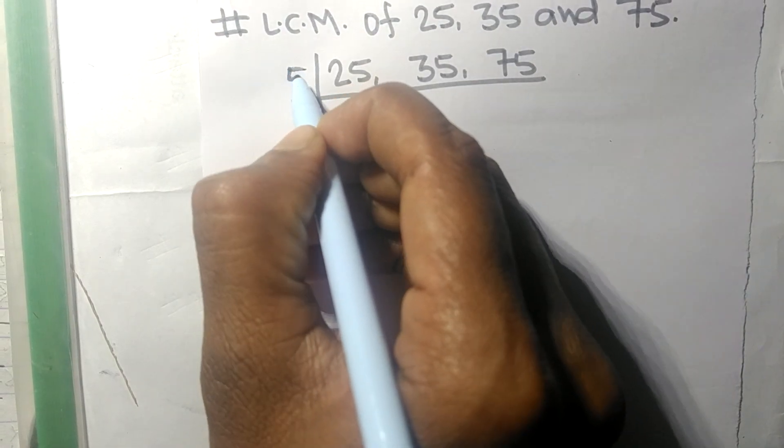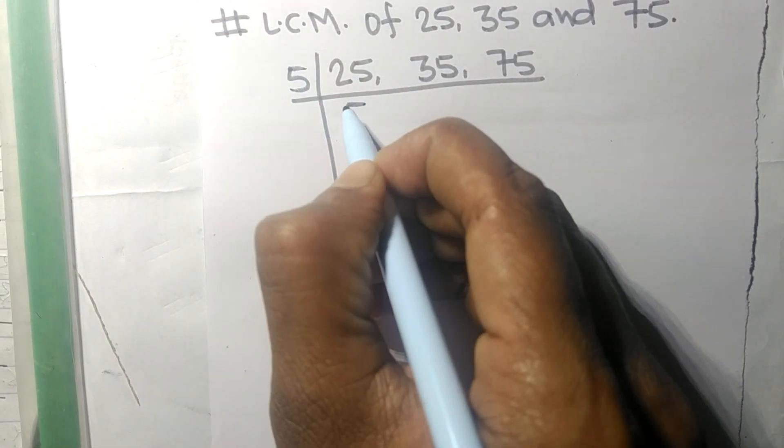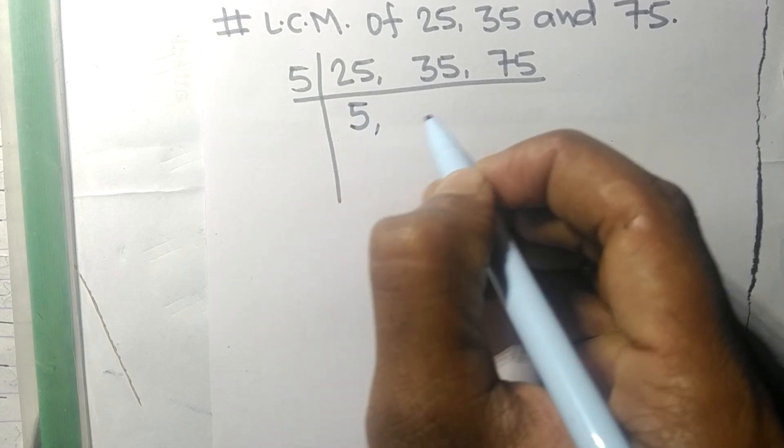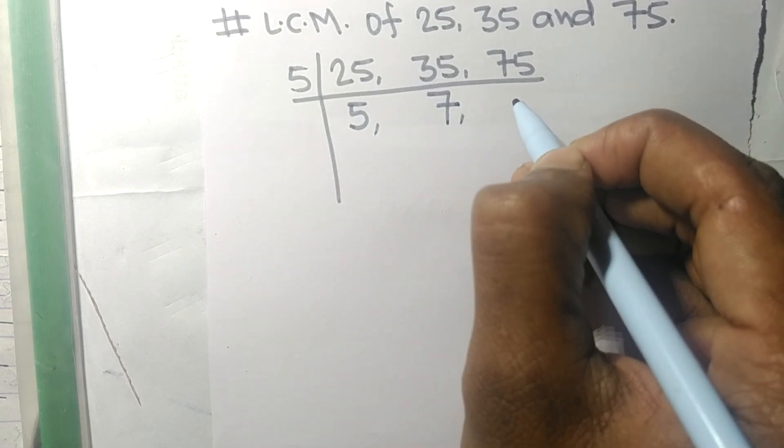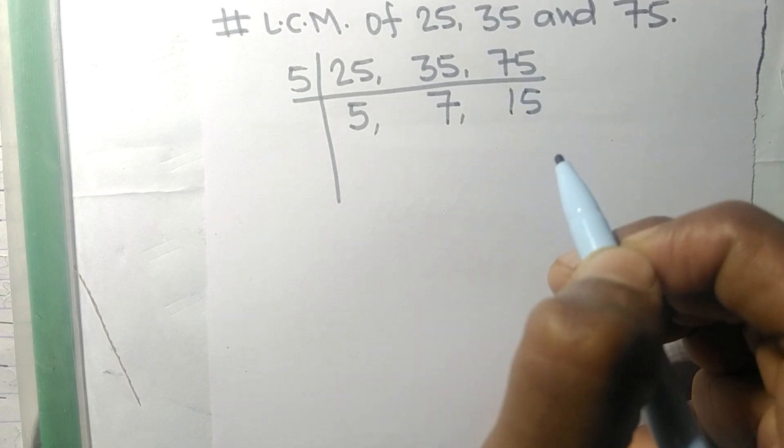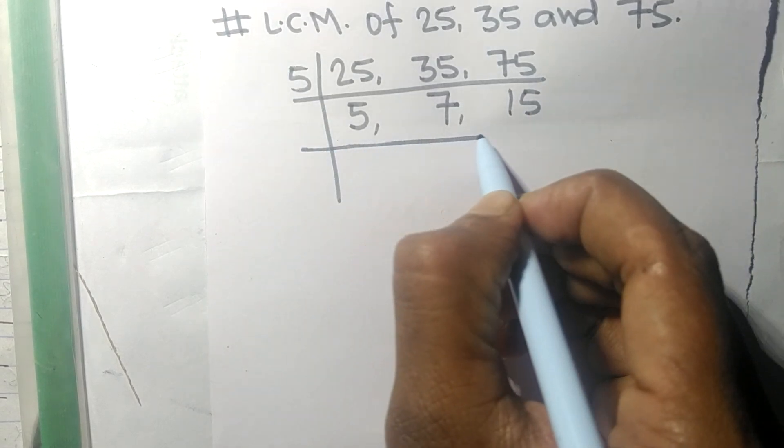5 times 5 means 25, 5 times 7 means 35, and 5 times 15 means 75.